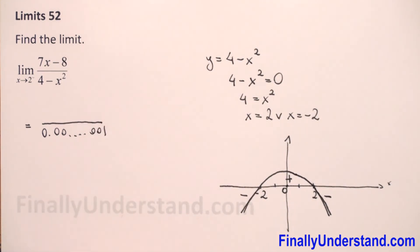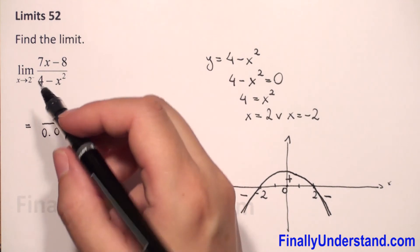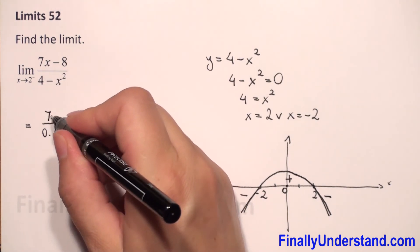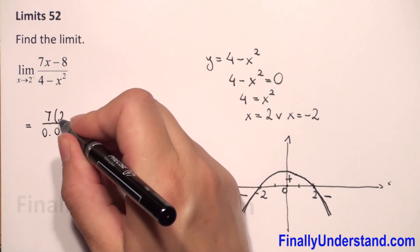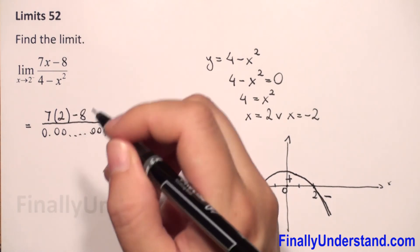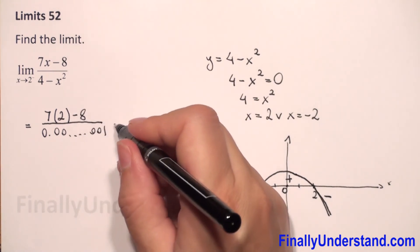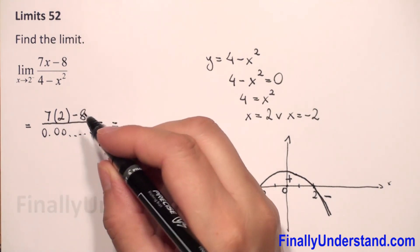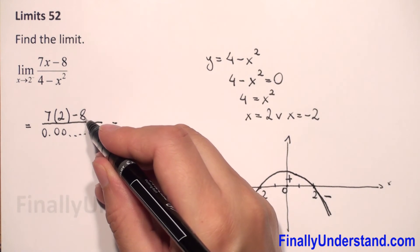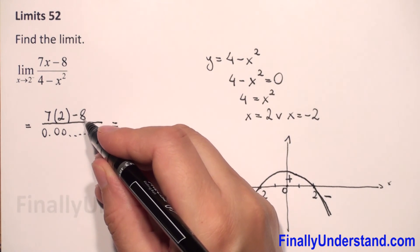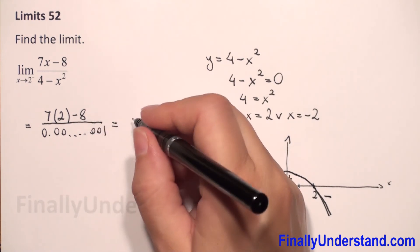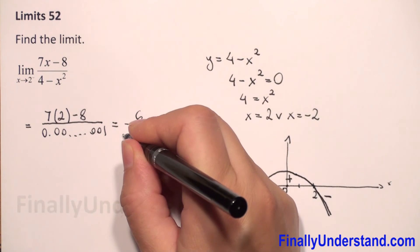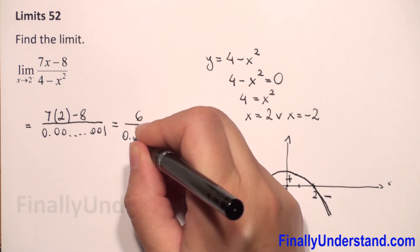For the denominator, we simply replace x by 2: 7 times 2 minus 8 equals 14 minus 8, which is 6. So the denominator equals 6 over this very small positive number.